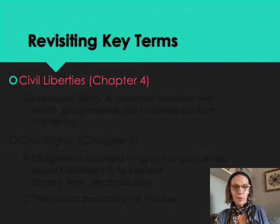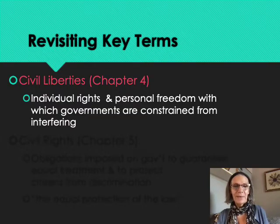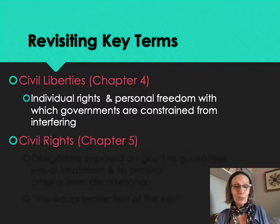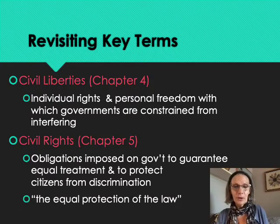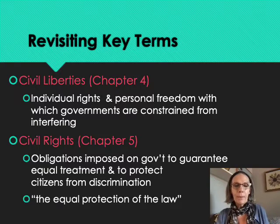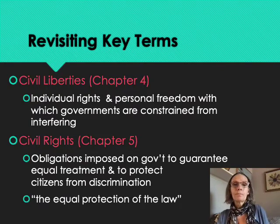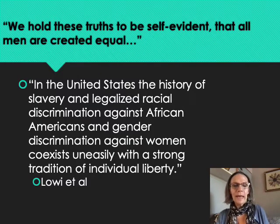Last week you read Chapter 4, which focused on civil liberties — the individual rights and personal freedoms from which government is constrained from interfering. This week we are turning our sights to civil rights, Chapter 5. Civil liberties tell government what it can't do; civil rights tell government what it must do — and what it must do is guarantee equal treatment of people and protect citizens from discrimination.